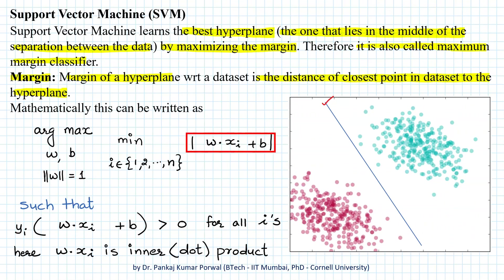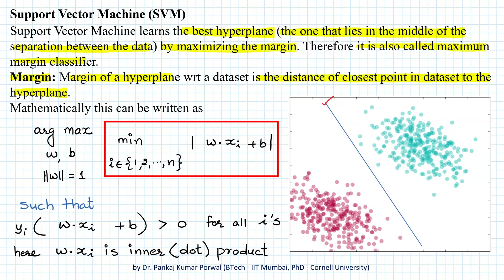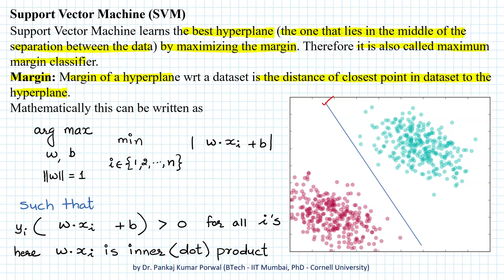This expression gives the distance of point xi from the hyperplane. We find the distance for all points in our dataset and choose the minimum distance — that is the margin — for the hyperplane defined by w and b. The argmax over w and b with the constraint that the magnitude of w equals 1 (since w is a unit vector) learns the hyperplane for which the margin is maximum. This constraint also ensures that the data is linearly separable.